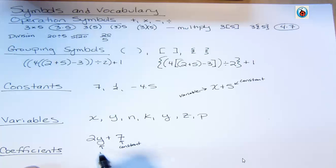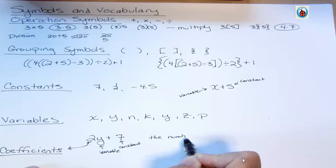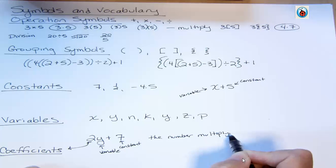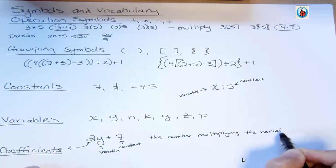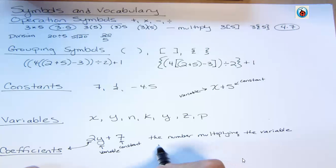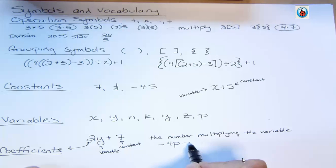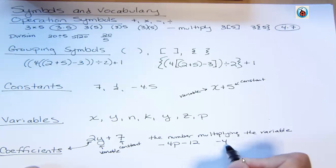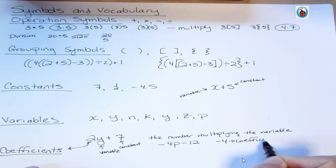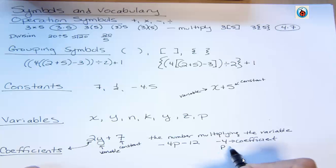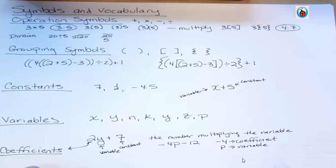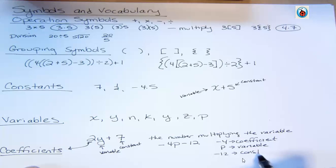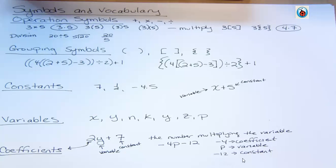The variable is the Y. But what's the 2? Well, the 2 is the coefficient, because a coefficient is the number multiplying the variable. That's what a coefficient is. So if I have something like negative 4P minus 12, then negative 4 is the coefficient because that's what's multiplying the variable. P is the variable because that's the letter that we're using for our unknown value. And because there's a minus in front of it, we're going to say negative 12 is the constant term.